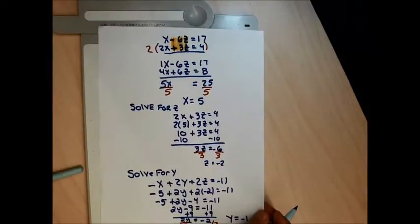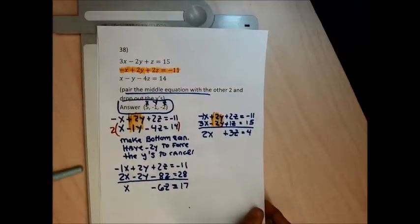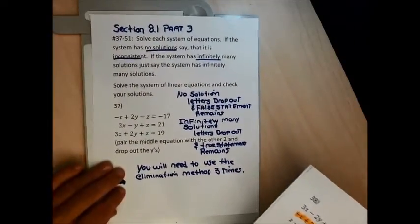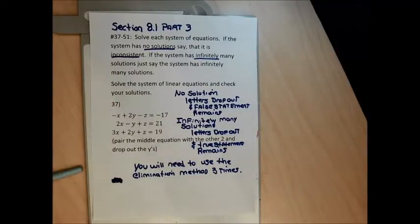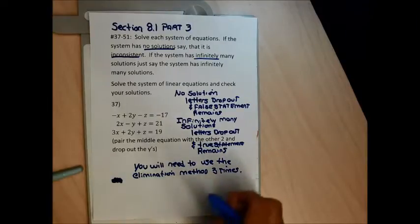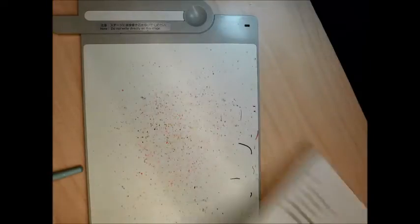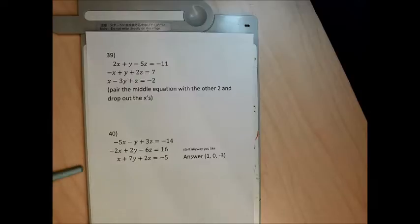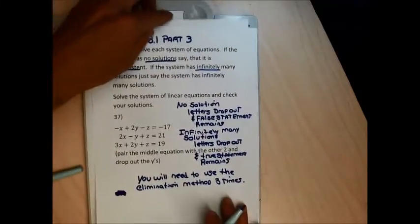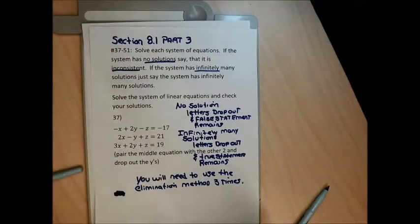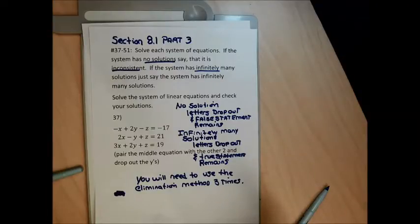I'll write my answer as an ordered triple. That was a lot of work — it took a full page and a half. For problem 37, the answer is x equals 7, y equals negative 3, z equals 4. Checking these problems is tedious — you plug each number into all three equations. There's a slick way to check using a calculator, which I'll show in the next section.